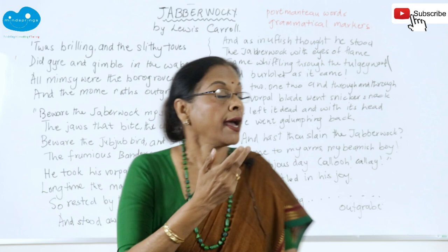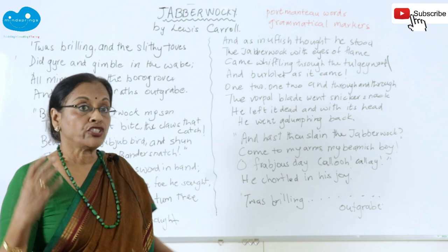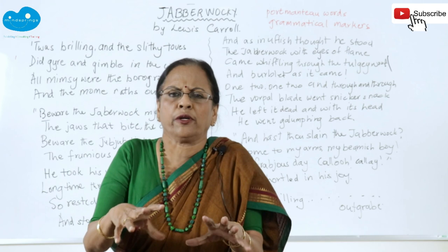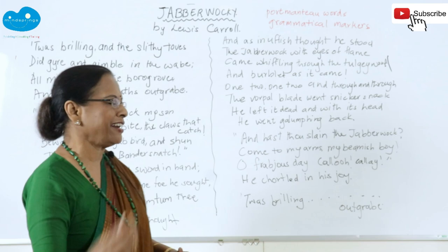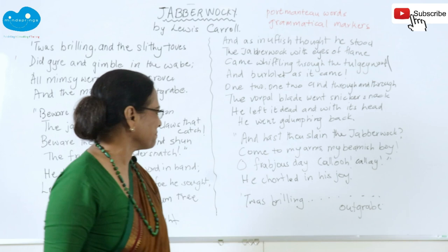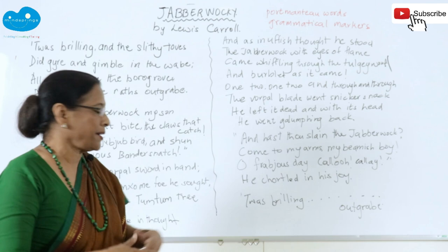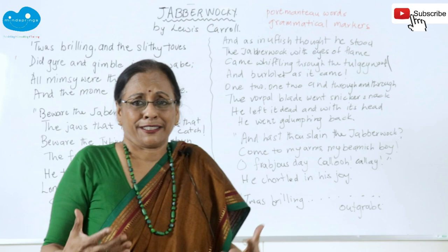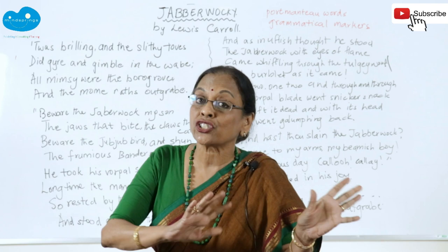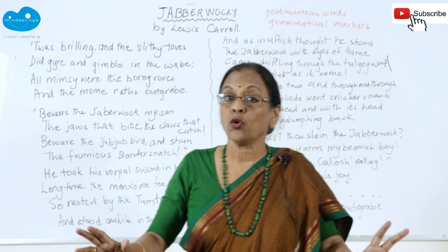And as in uffish thought he stood, the Jabberwock with eyes of flame came whiffling through the tulgey wood and burbled as it came. One-two! One-two! And through and through, the vorpal blade went snicker-snack. He left it dead, and with its head he came galumphing back. 'And hast thou slain the Jabberwock? Come to my arms, my beamish boy! O frabjous day! Callooh! Callay!' He chortled in his joy. 'Twas brillig, and the slithy toves did gyre and gimble in the wabe. All mimsy were the borogoves, and the mome raths outgrabe.